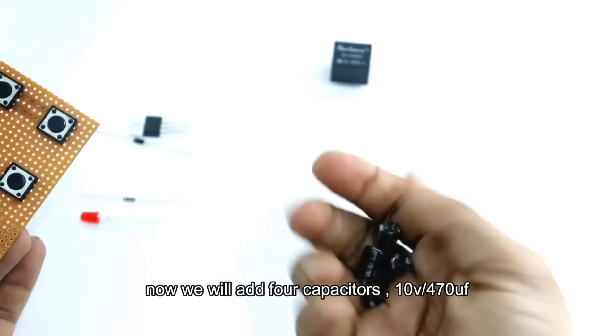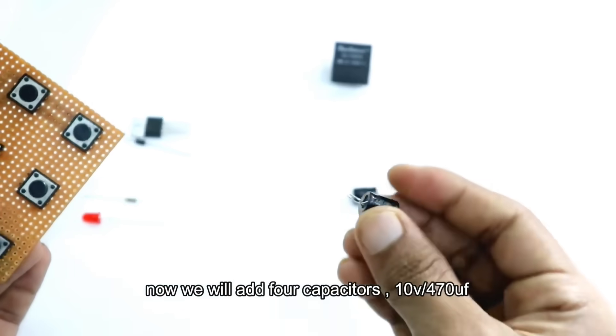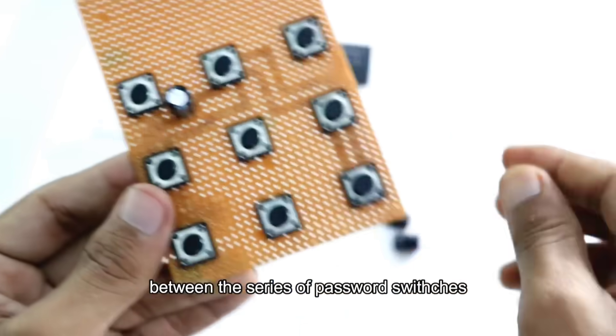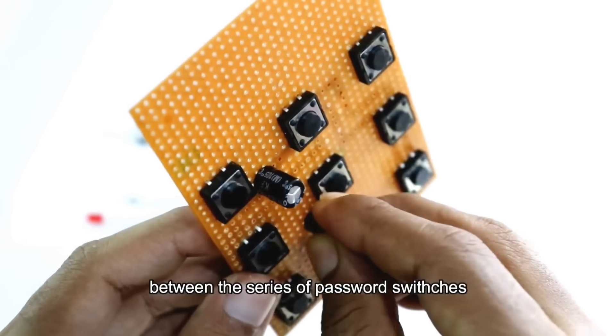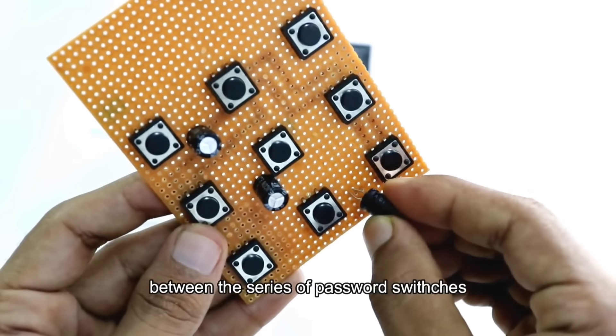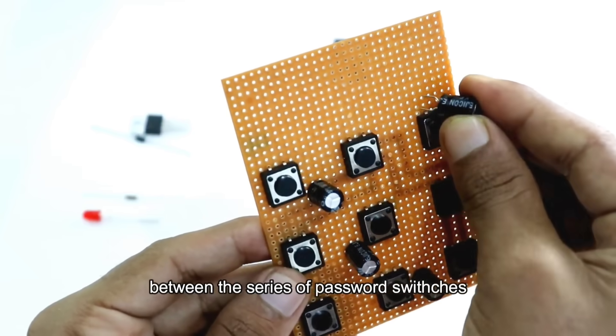Now let's begin by placing four capacitors with values 10 volts, 470 microfarads each. These capacitors are connected in series across the switch section of our password mechanism. Their purpose is to help stabilize voltage spikes and reduce noise in the circuits.